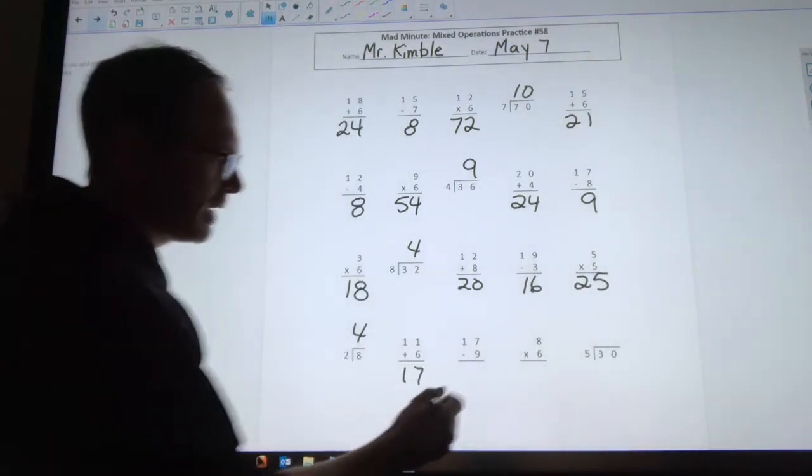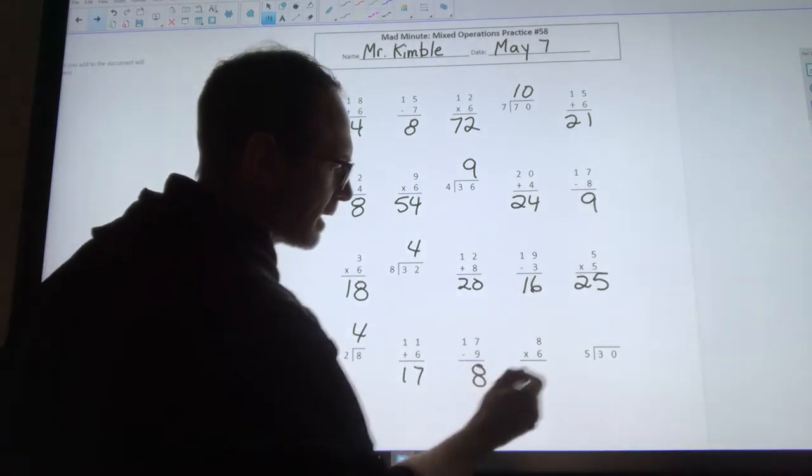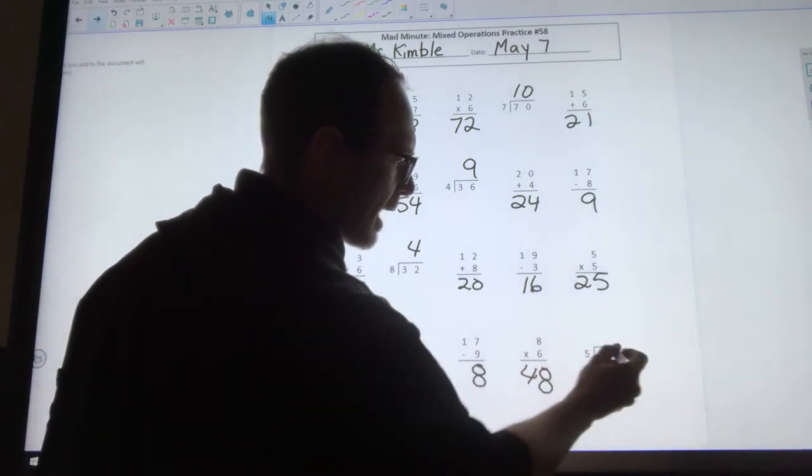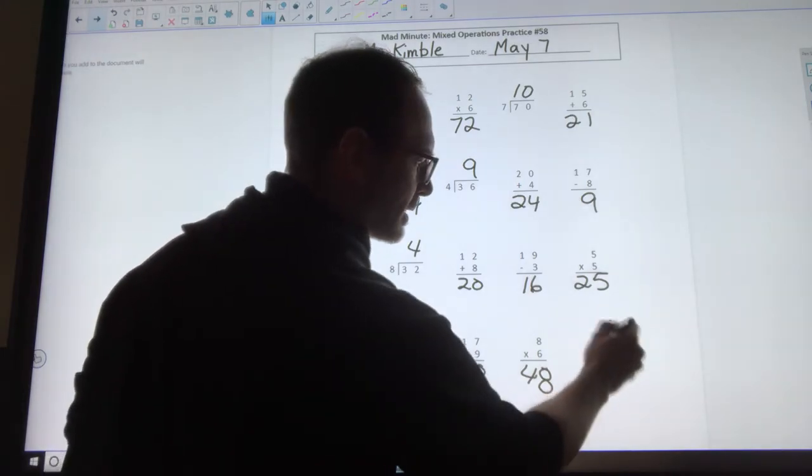11 plus 6 is 17. 17 minus 9 is 8. 8 times 6 is 48. And 30 divided by 5 is 6.